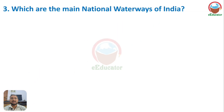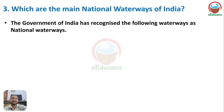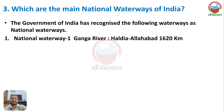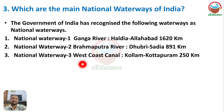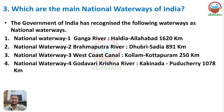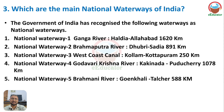Question: Which are the main national waterways of India? The Government of India has recognized five major national waterways. NW1: Ganga River, Haldia to Allahabad — 1620 km. NW2: Brahmaputra River, Dhubri to Sadiya — 891 km. NW3: West Coast Canal, Kollam to Kottapuram — 250 km. NW4: Godavari-Krishna River, Kakinada — 1778 km. NW5: Brahmaputra (East), Goinkhali — 588 km.